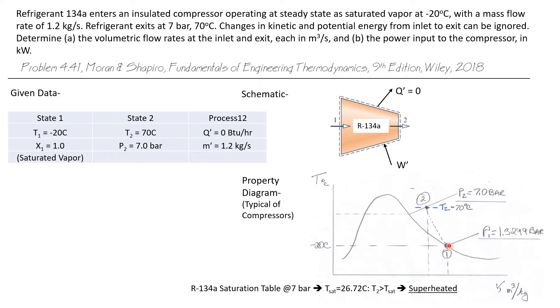Compressors have to have gaseous or vapor states at both the inlet and the exit. So state one is a saturated vapor. State two has to be superheated. And we plot that here at 7 bar and 70 degrees C.